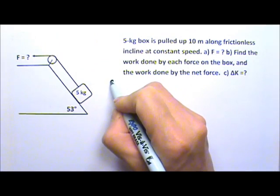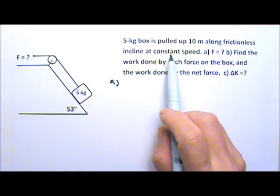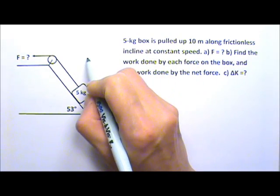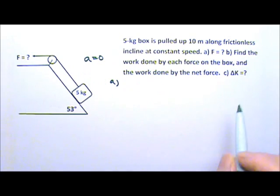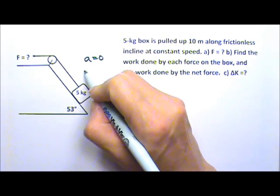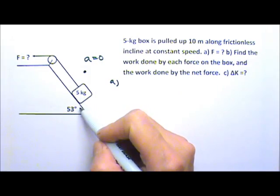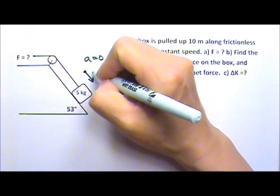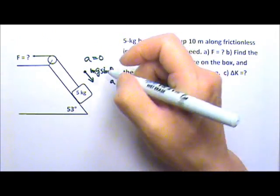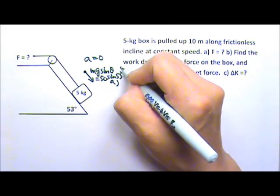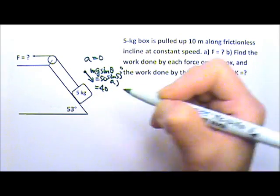For part A, we're looking for a force, so we have to do the forces process. At constant speed, the acceleration is zero. We draw the force diagram for the box — since any acceleration would be along the incline, we only need forces along the incline. Instead of drawing Mg, we draw its component down the incline: Mg sin θ = 50 × sin 53° = 40 newtons.